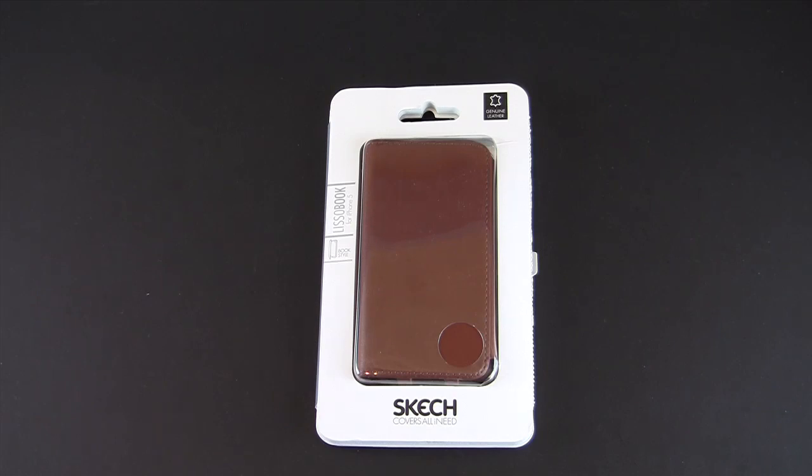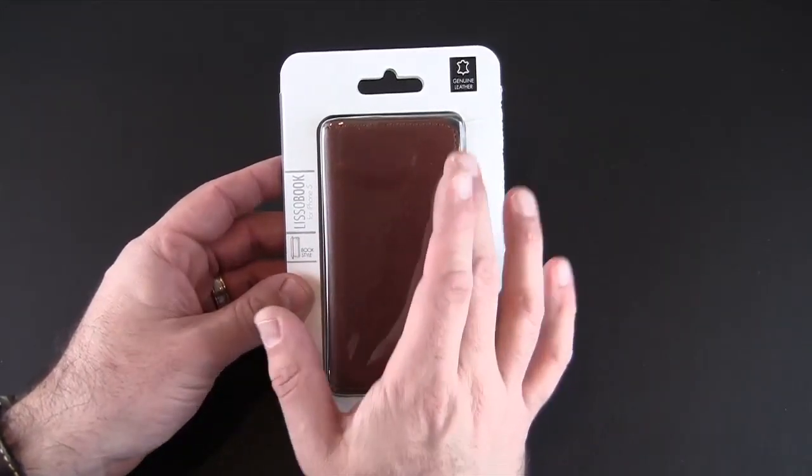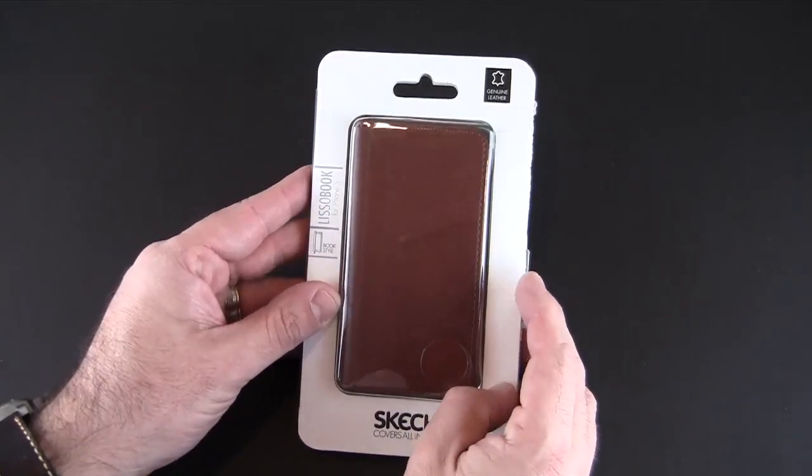Hey guys it's Larry Greenberg and today we're taking a look at the Sketch LesoBook case for the iPhone 5. This case comes in three colors: light brown, dark brown, and black. It's made from genuine leather and the price is to be determined.